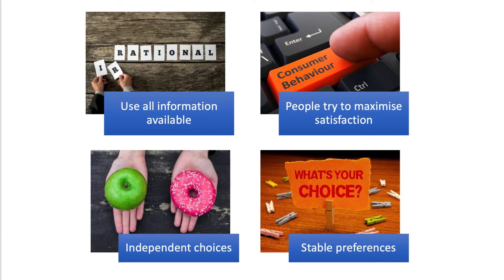We also assume that people choose independently of one another — that my choices and preferences don't influence anybody else's in the market. We also assume that the preferences, tastes, and values of consumers are relatively fixed and stable. This means people can make their choices to maximize satisfaction and can make rational decisions.